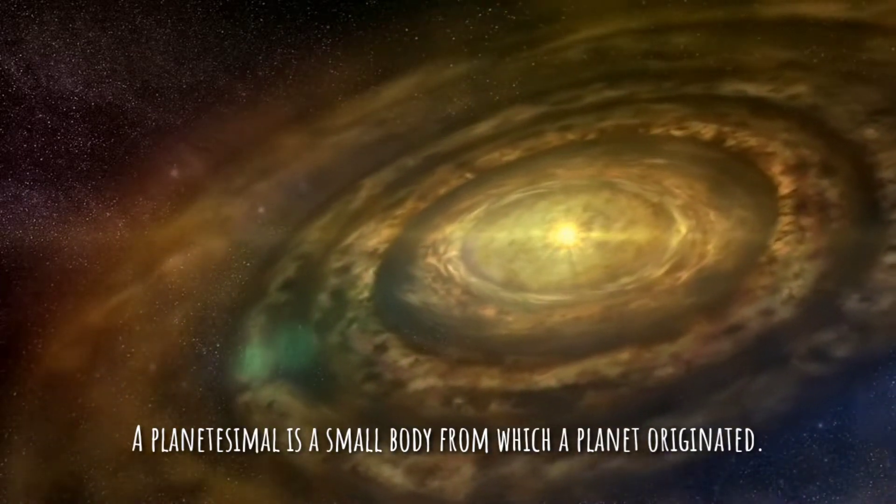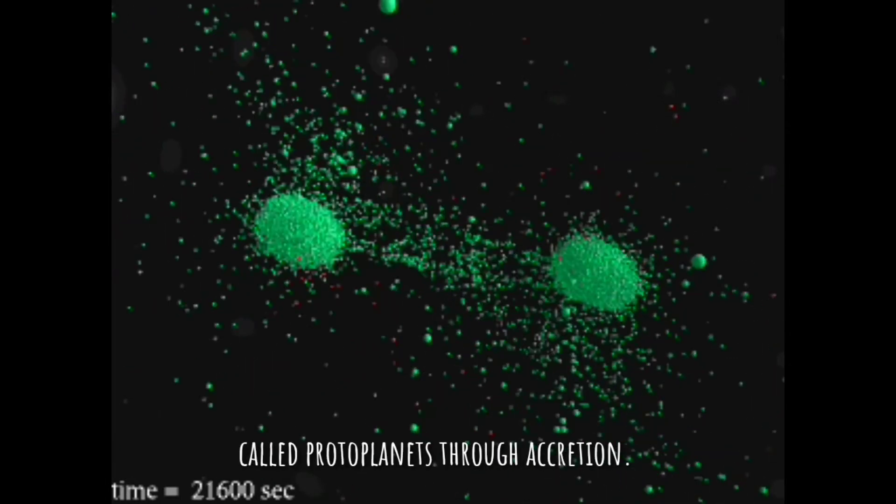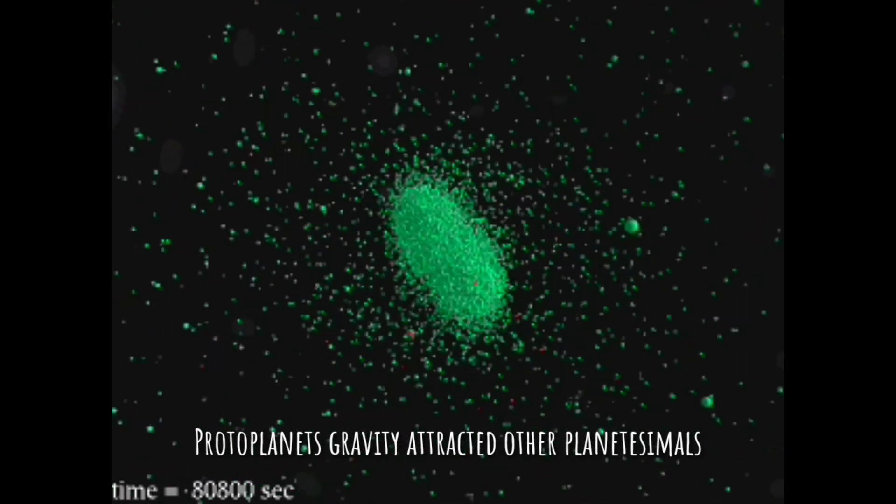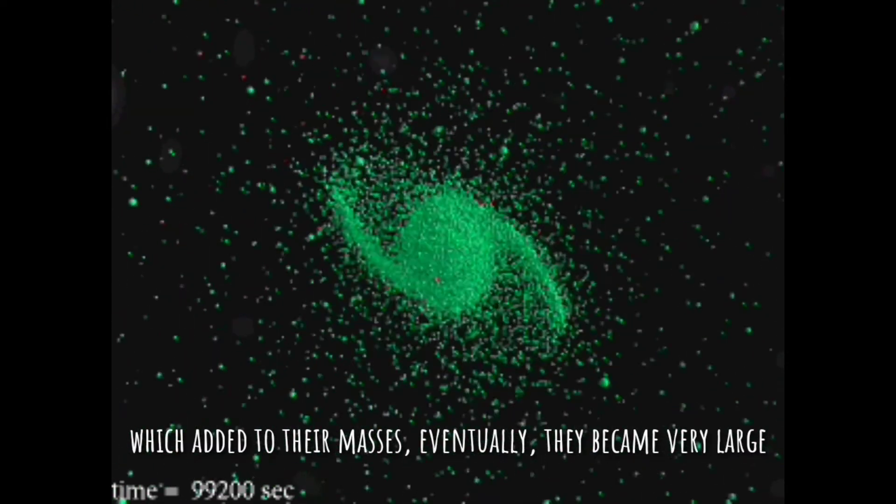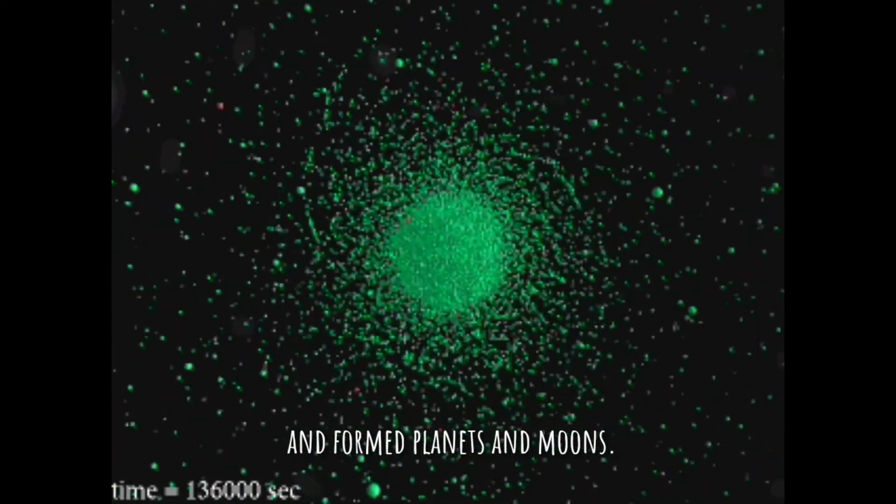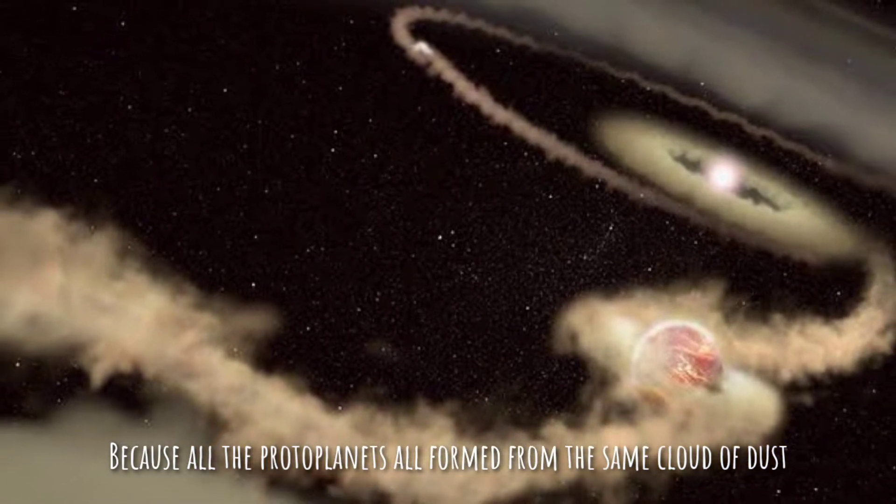Eventually, the planetesimals formed into larger bodies called protoplanets through accretion. Protoplanets' gravity attracted other planetesimals, which added to their masses. Eventually they became very large and formed planets and moons.